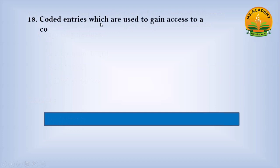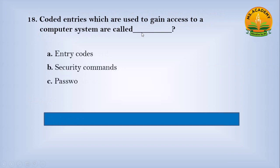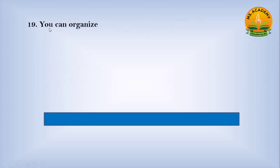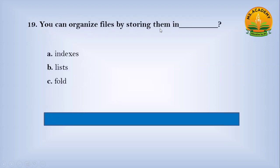Coded entries which are used to gain access to a computer system are called dash. Option A Entry codes, option B Security commands, option C Passwords. Answer: C. Number Passwords. You can organize files by storing them in dash. Option A Index, option B Lists, option C Folders. Answer: C. Number Folders.